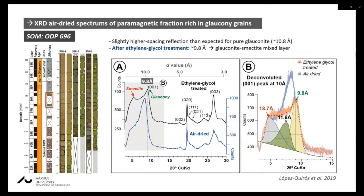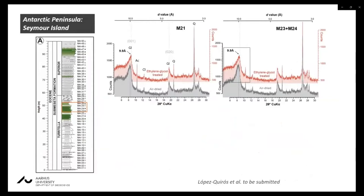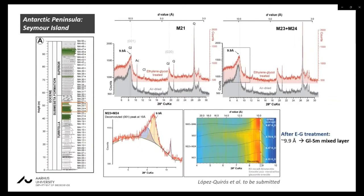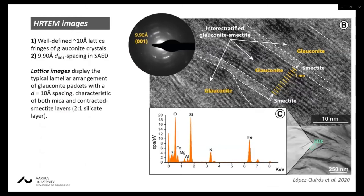XRD analysis of the paramagnetic fraction from ODP 696 indicates slightly higher d-spacing reflection than expected for pure glauconite; after ethylene glycol treatment, expansion of the peak to 9.8 Ångström allowed characterization as a glauconite-smectite mixed layer content. The same result was found in the Submeseta Formation of Seymour Island. High-resolution transmission electron microscopy reticular images display well-defined lattice rings of glauconitic crystals, corroborating the presence of glauconite with an interlayer spacing of 10 Ångström including interstratified pure crystalline smectite layers.